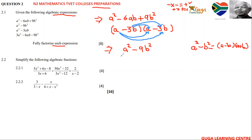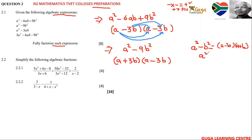We apply the difference of squares here. Factors of a squared are a and a. Factors of b squared are b and b. Factors of 9 are 3 and 3. So the answer is one bracket with a plus 3b and the other with a minus 3b. You can also prove using the FOIL method — a times a gives a squared, a times negative 3b gives negative 3AB, positive 3b times a gives positive 3AB, and those cancel out, leaving a squared minus 9b squared.